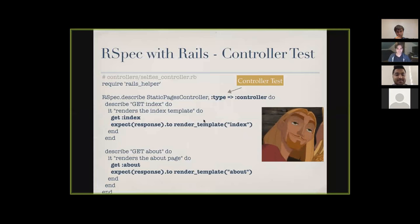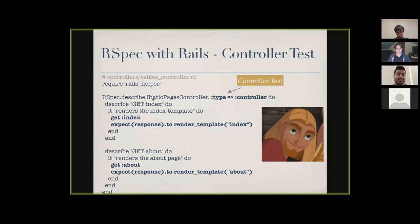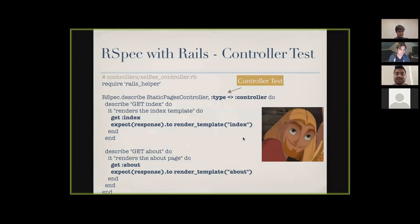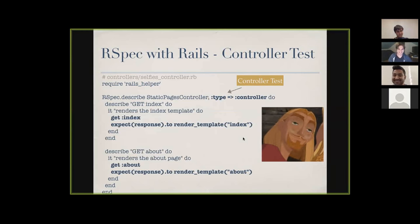Now let's get into controller tests. This is the latest RSpec 3.3 syntax — no more `should`. It uses `RSpec.describe StaticPagesController, type: :controller`. Then `describe 'GET index'` — it renders the index template — you `get :index` and `expect(response).to render_template(:index)`. It reads like English, which is probably one reason a lot of people use RSpec in the industry. I picked it up while looking for jobs.